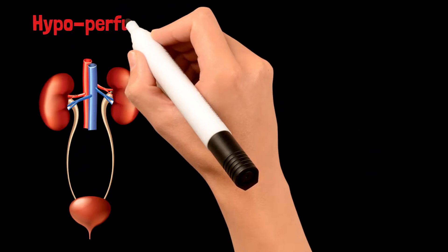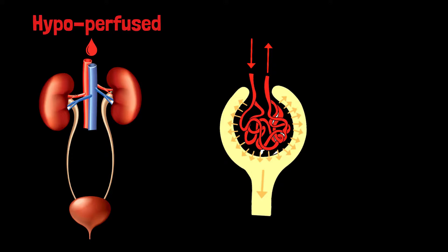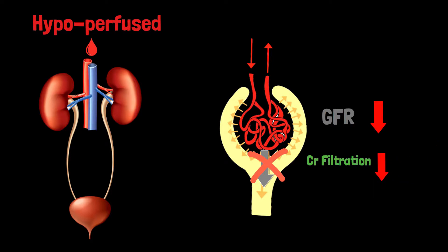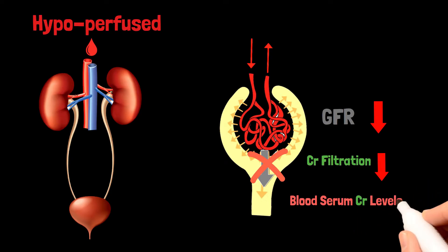In pre-renal AKI, the kidney is hypoperfused, which means it receives less fluid. If it receives less fluid, it doesn't filter as much, so the GFR (glomerular filtration rate) will decrease because the filtering ability of the kidneys is impaired. Creatinine is a freely filtered molecule — it filters from the glomerulus into Bowman's capsule and passes along with urine. If GFR is decreased, creatinine filtration also decreases, causing creatinine to accumulate in the blood serum and increasing serum creatinine levels.